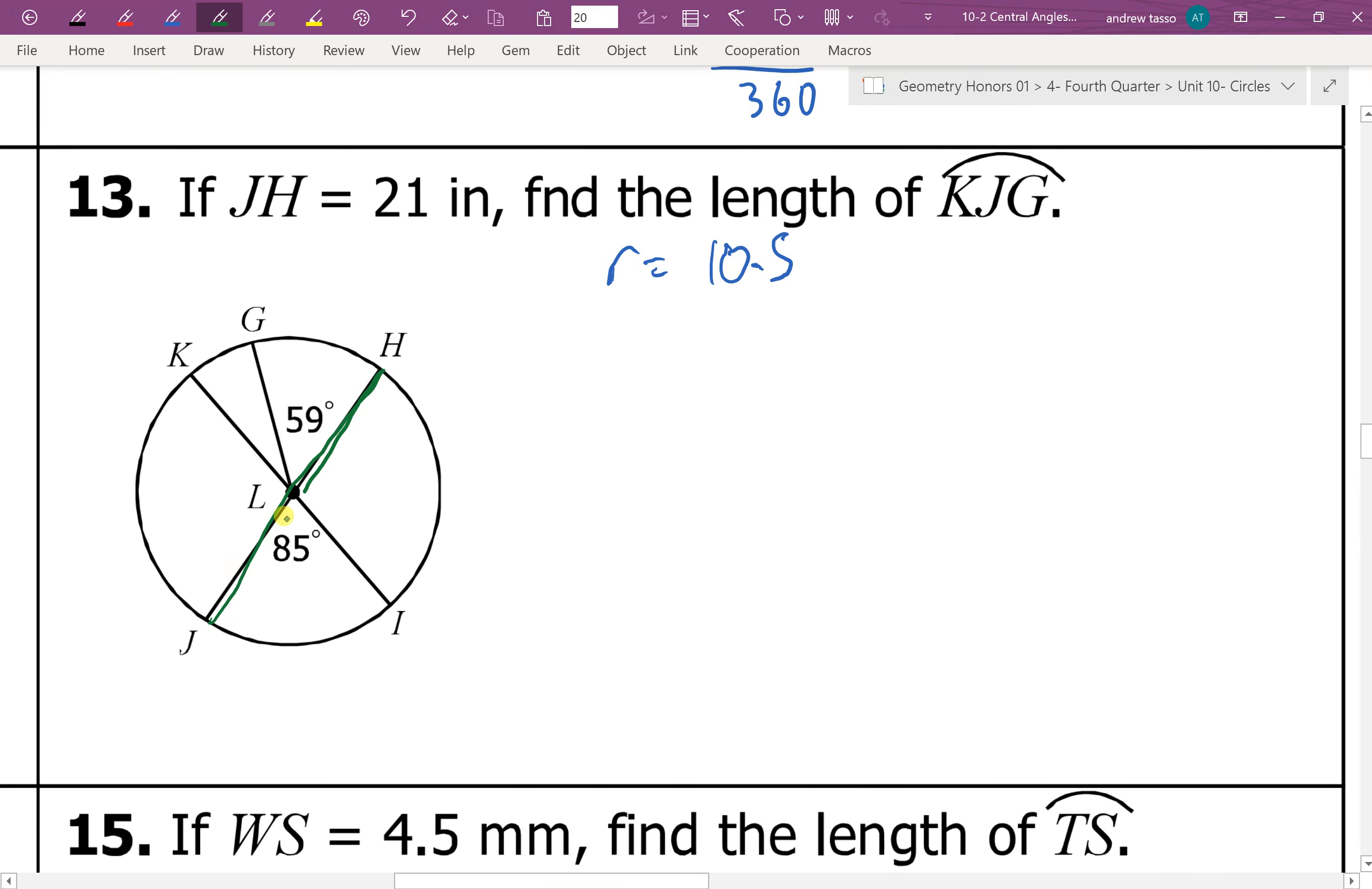Well, first off, we notice that here we have a straight line. So this would be 180 degrees. So if I do 180 subtract 85, that leaves 95 for the other side.